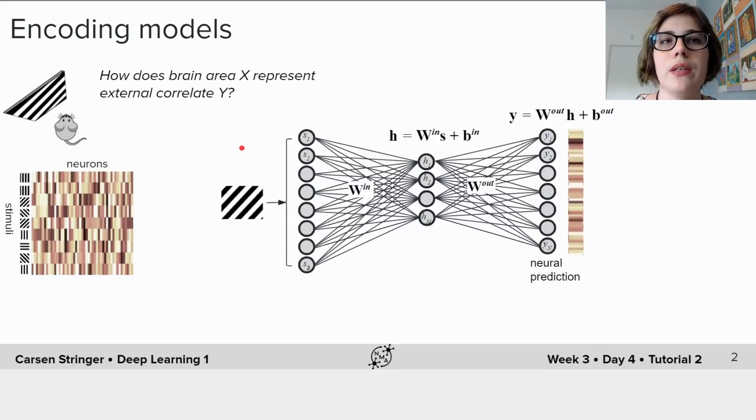In this tutorial we are going to build an encoding model to try to understand how neurons represent different visual stimuli. Now our network will take as input a stimulus S and output a prediction for each of these neurons' activity, which are these various YIs.